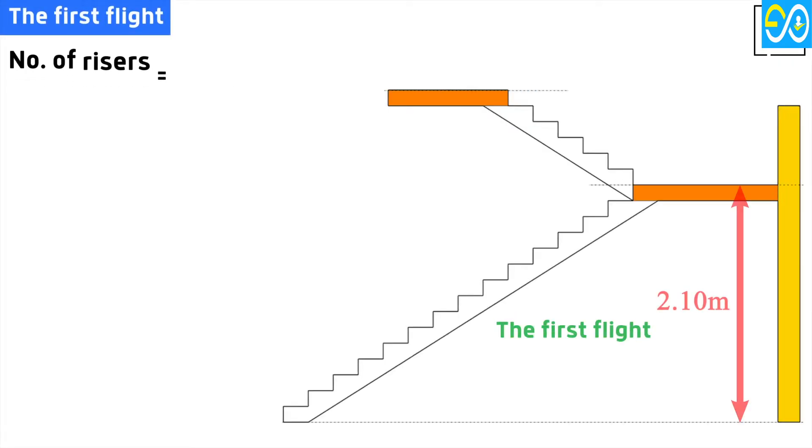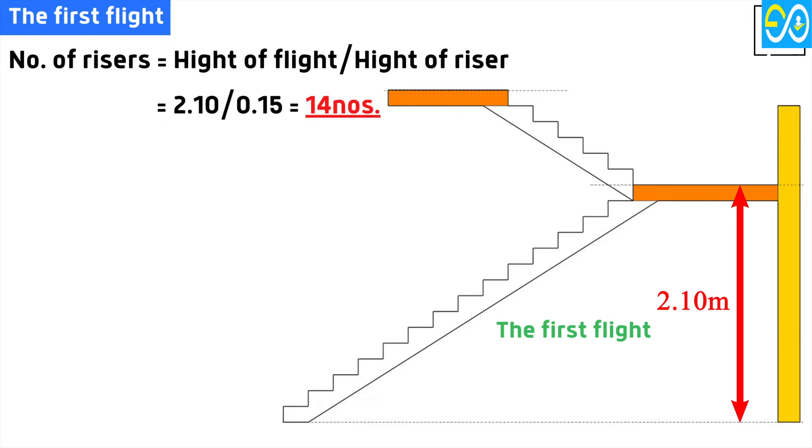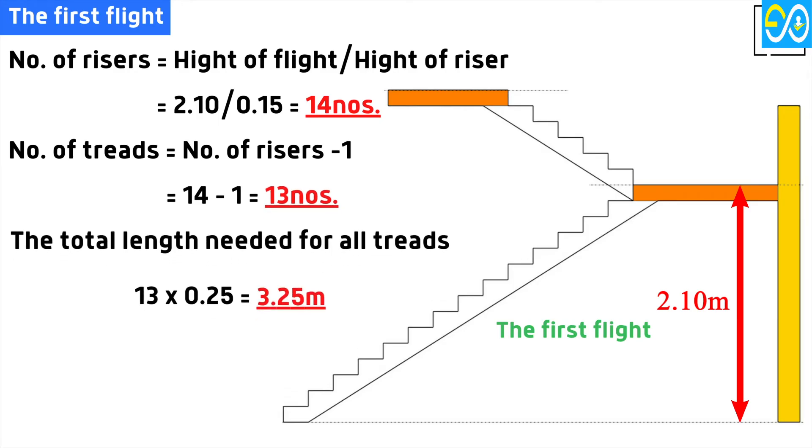Number one, the first flight. Number of risers equals height of flight divided by height of riser equals 2.1 divided by 0.15 equals 14 numbers. Number of treads equals number of risers minus 1 equals 14 minus 1 equals 13 numbers. The total length needed for all treads equals 13 times 0.25 equals 3.25 meters.